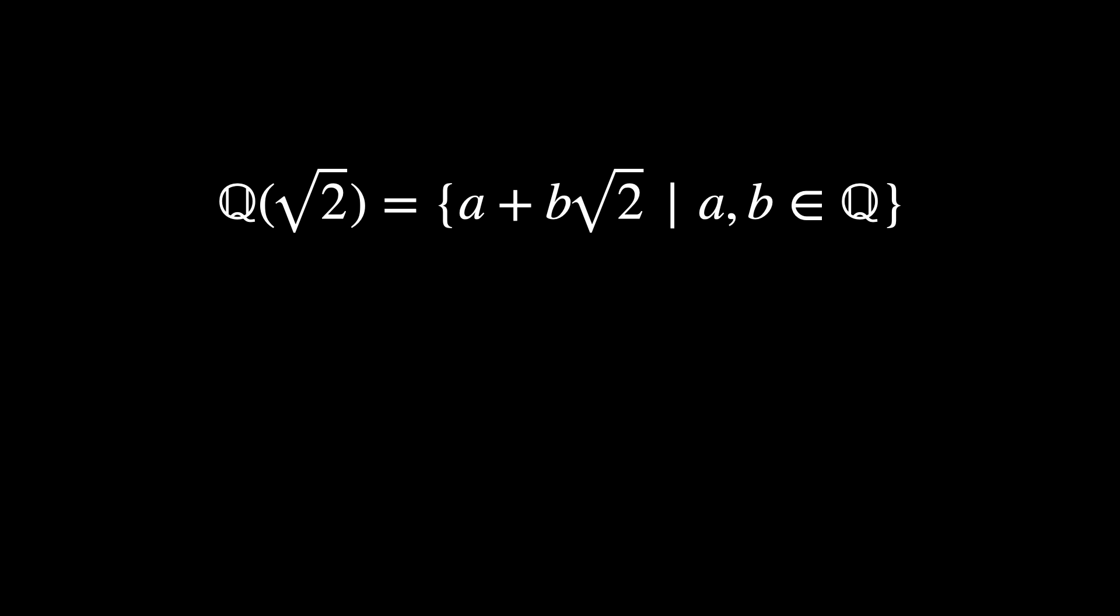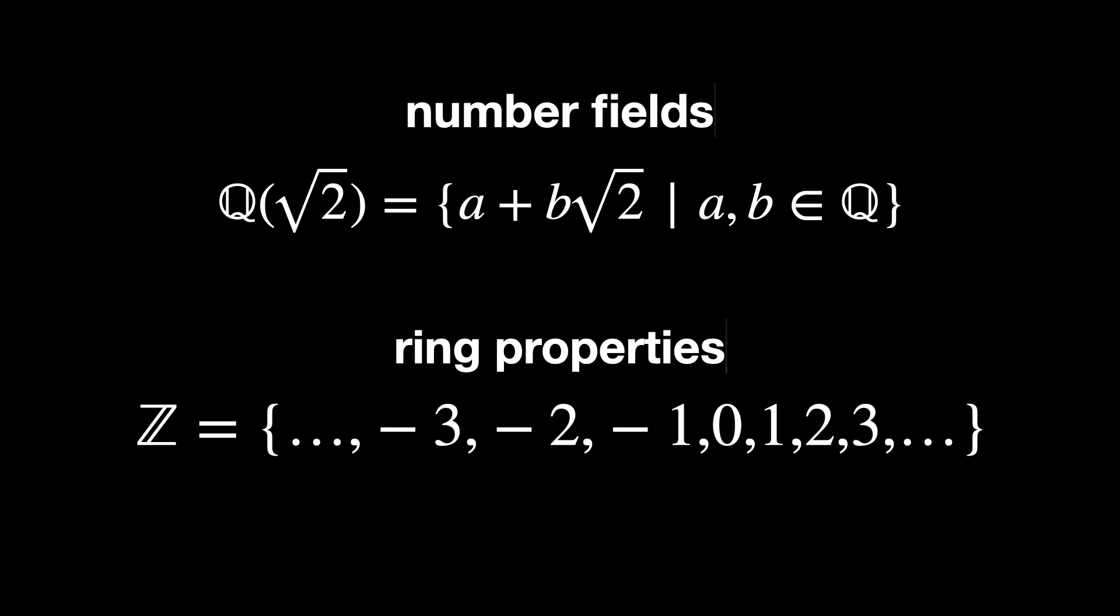Algebraic Number Theory studies many kinds of structures and systems that can be derived from these numbers, like number fields and ring properties. The theory also goes into ideals, units, and the unique factorization of ideals in rings of algebraic integers.